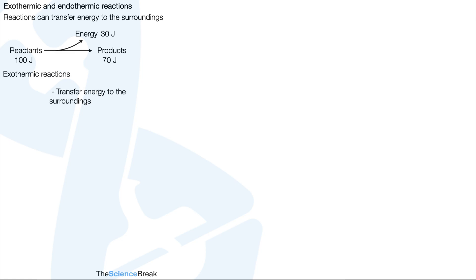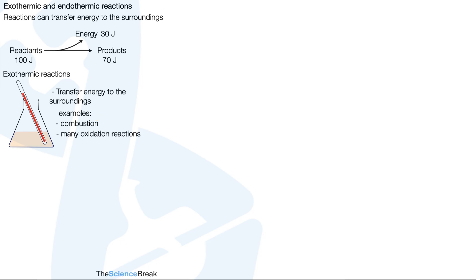For exothermic reactions, these transfer energy to the surroundings. Imagine we have a reaction going on in a flask — if it was an exothermic reaction, we would detect a temperature rise as shown by the thermometer. Examples of exothermic reactions include combustion reactions, which is the same thing as burning. Many oxidation reactions are exothermic; in fact combustion is an oxidation reaction. Neutralization reactions are also exothermic, for example acid with alkali or acid with base.